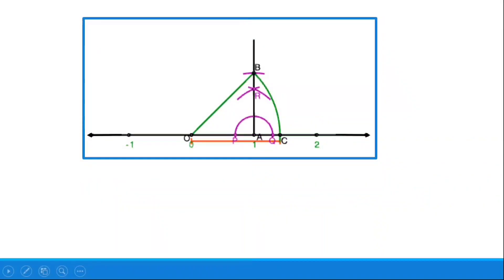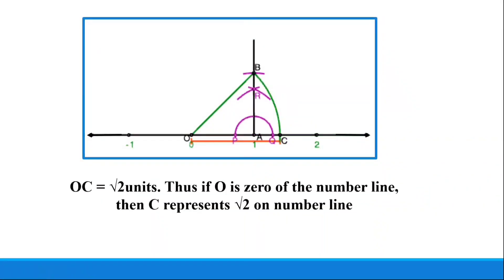Don't forget to write the answer. Since OC is equal to root 2 units, and if O represents 0 on the number line, then C represents root 2 on the number line. I hope this video made it clear how to represent root 2 on the number line. Watch it again in case you have any doubt. Thank you so much.